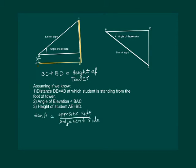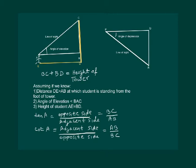We know that tan A is equal to opposite side by adjacent side. Here, the opposite side is BC in triangle ABC and the adjacent side is AB. We know AB and we know angle A, so we can find BC. Or instead of tan A, we can also use cot of A, which is the reciprocal of tan A: cot A equals AB by BC, and hence we can find BC from here also, and thus find the height of the tower. This gives us some idea of how trigonometric ratios can be used to find heights and distances.